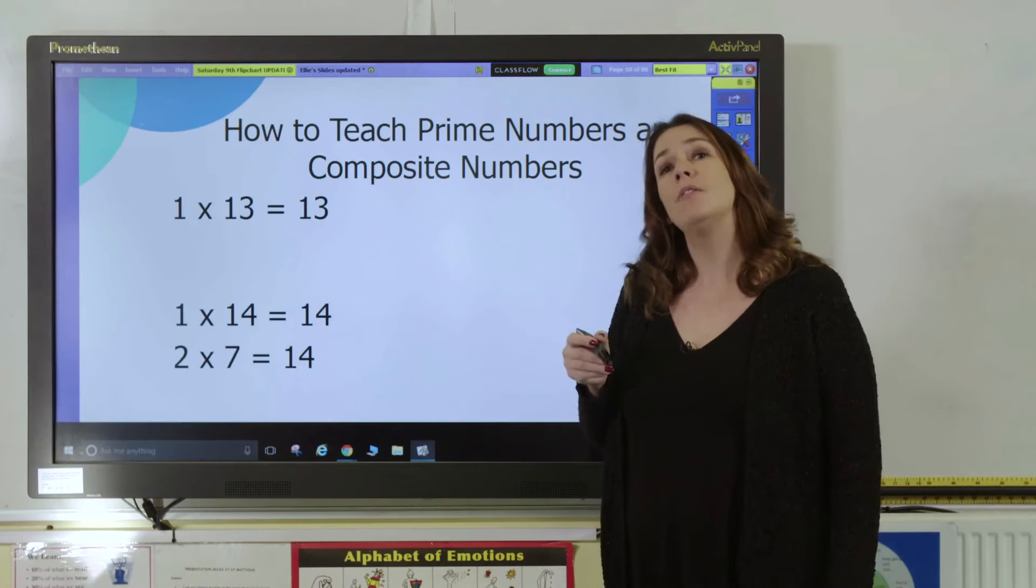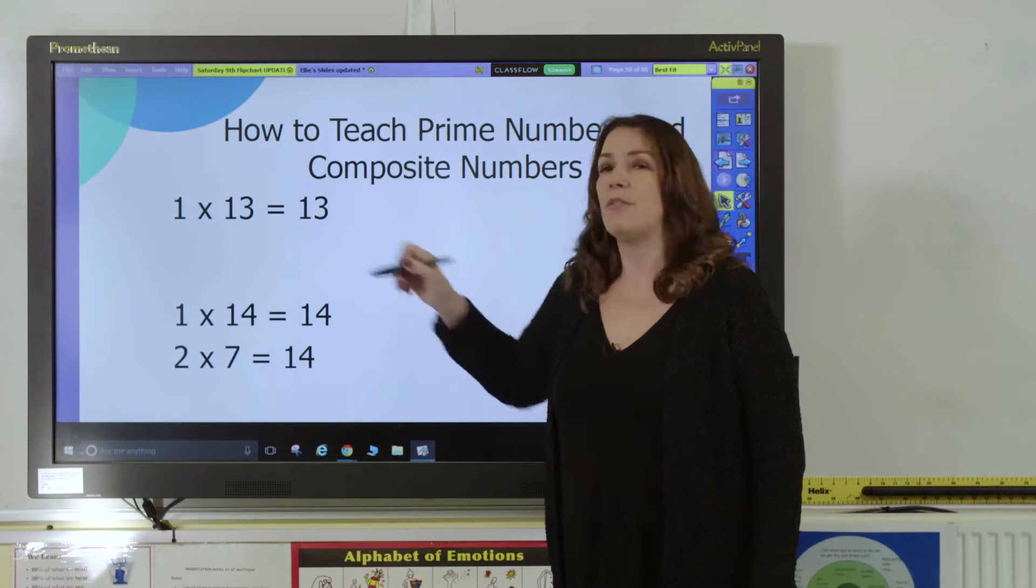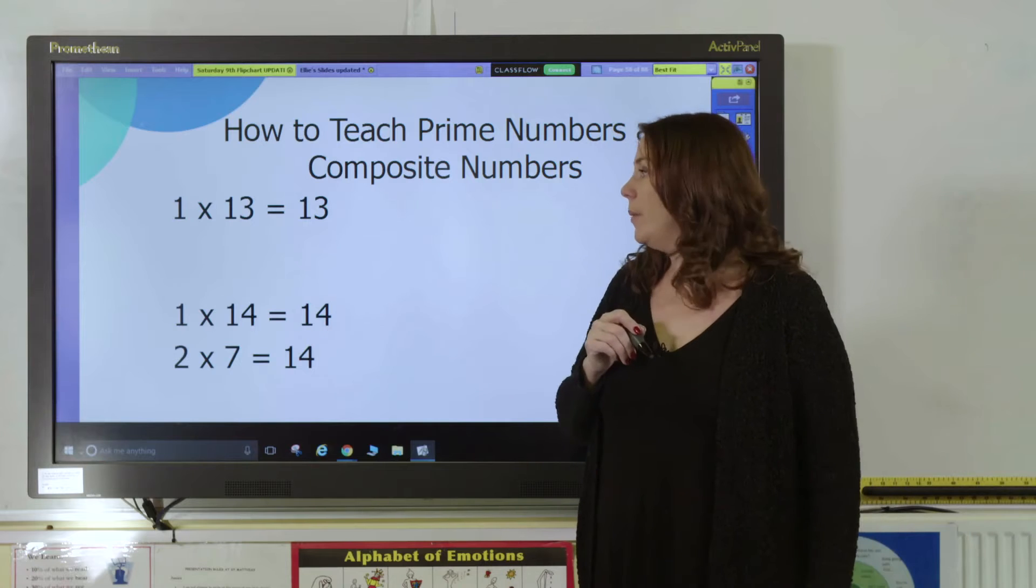All whole numbers have at least two factors. They have one and they have themselves in their times tables. Numbers that only have one and themselves in the times tables are called prime numbers. For example, the number 13 only has the factors 1 and 13 in its times table, so it is a prime number.